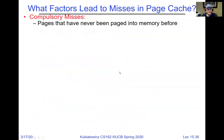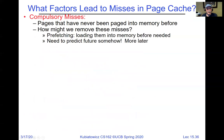What factors lead to misses in the page cache? Just like in regular caches: compulsory misses occur the first time we ever see something. One way to reduce them is prefetching — if you fault on a page, read the next few pages speculatively, hoping for spatial locality. Rather than pulling a single page on a miss, you pull in several.